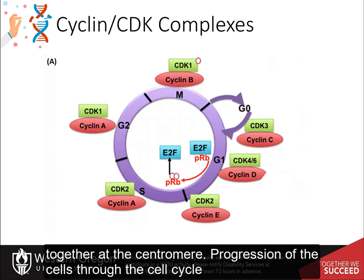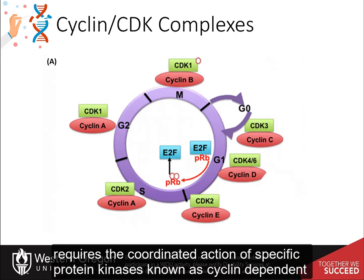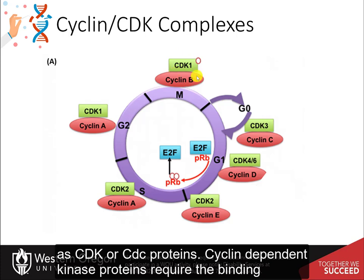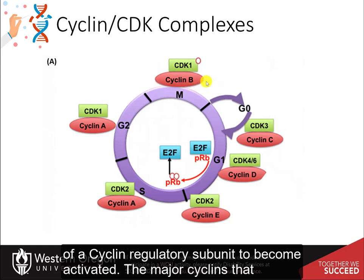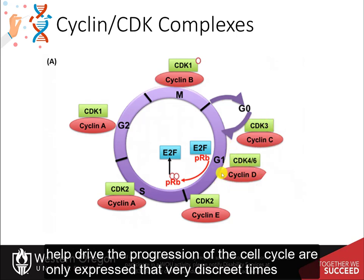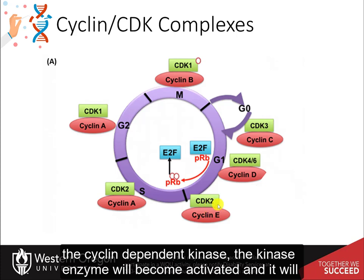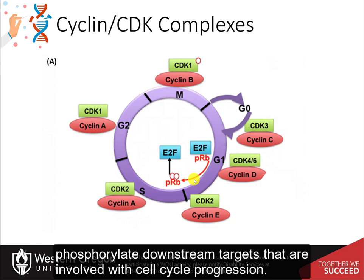Progression of cells through the cell cycle requires the coordinated action of specific protein kinases known as cyclin-dependent kinases, usually abbreviated as CDK or CDC proteins. Cyclin-dependent kinase proteins require the binding of a cyclin regulatory subunit to become activated. The major cyclins that help drive cell cycle progression are only expressed at very discrete times during the cell cycle. When an active cyclin encounters its counterpart cyclin-dependent kinase, the kinase enzyme becomes activated and phosphorylates downstream targets involved with cell cycle progression.